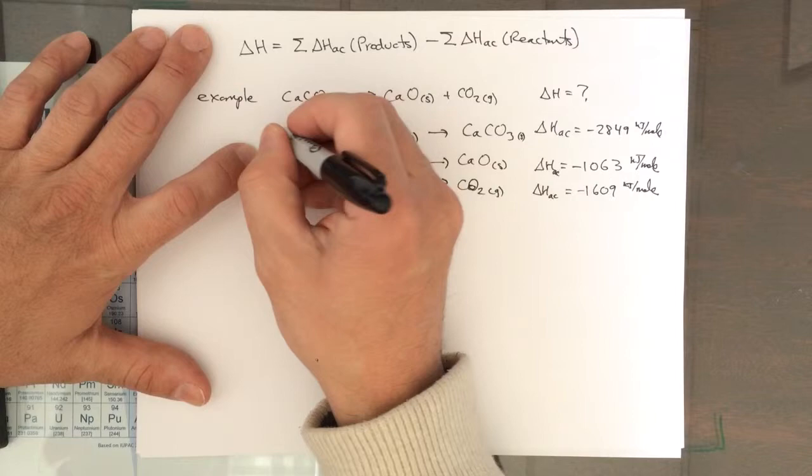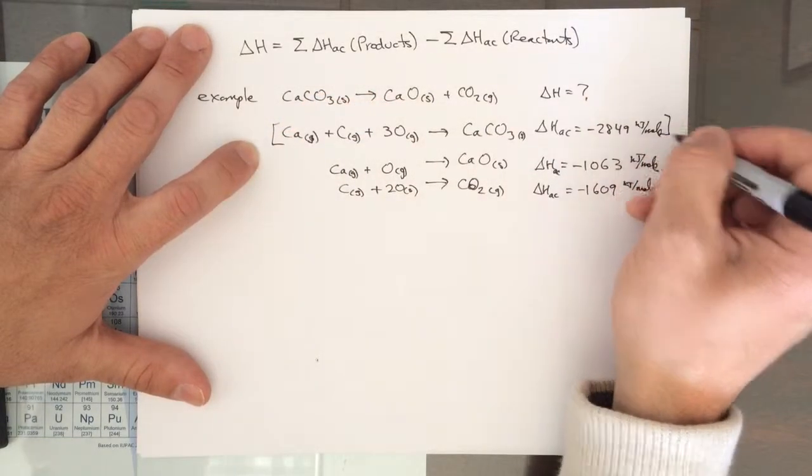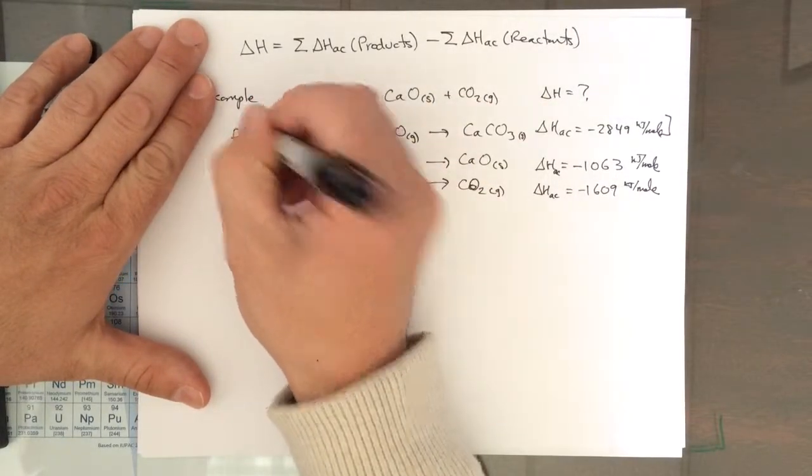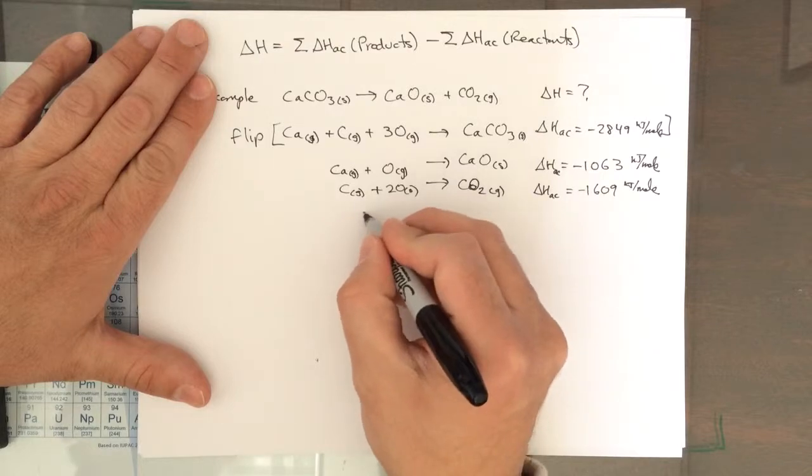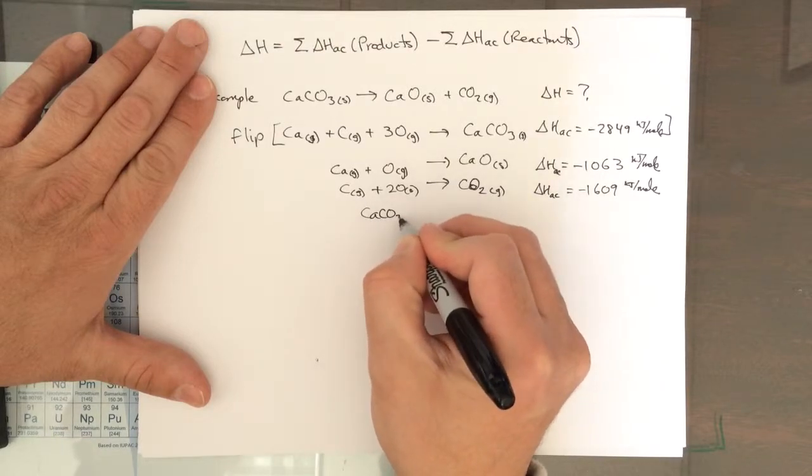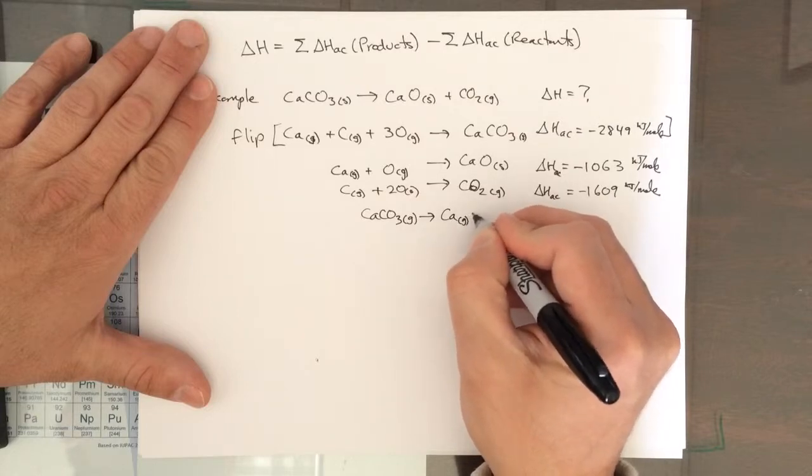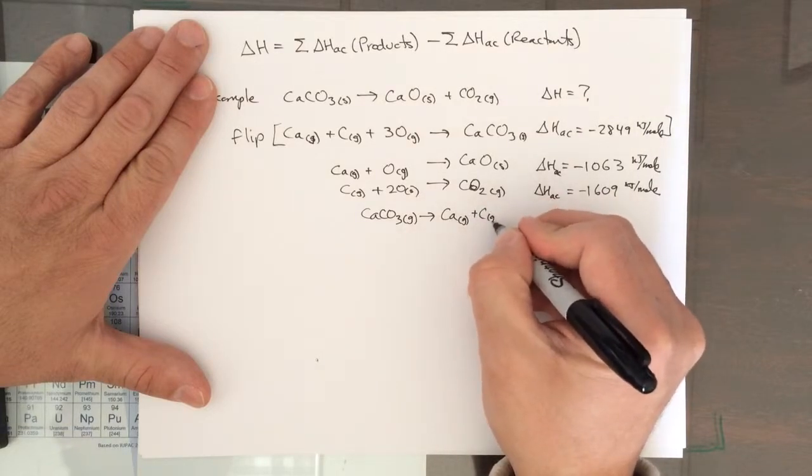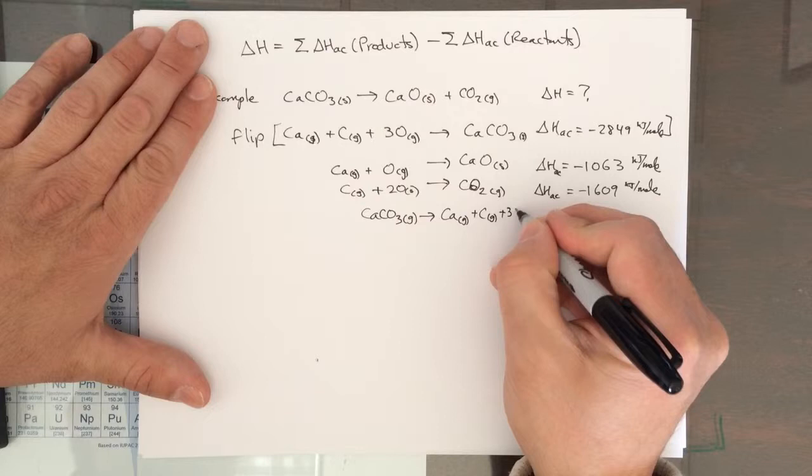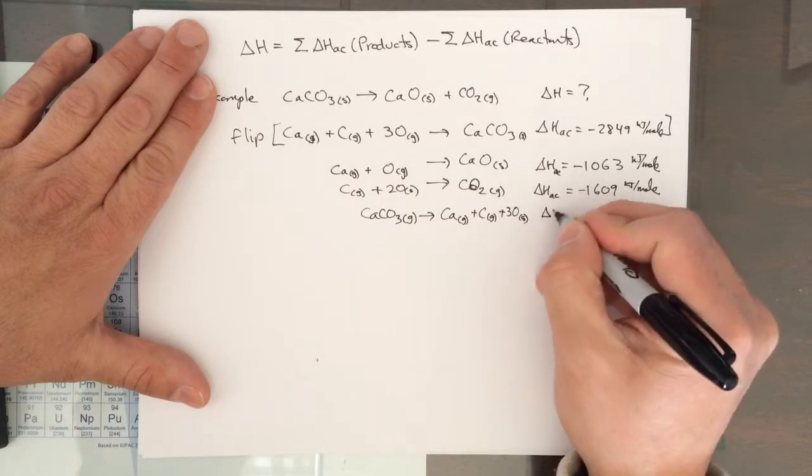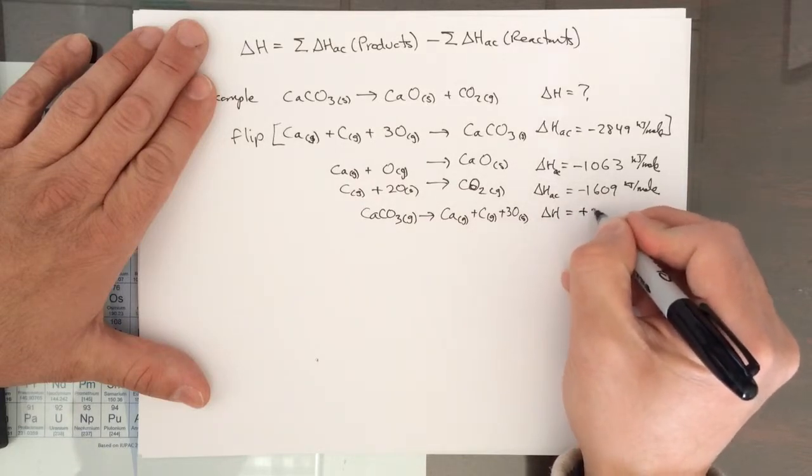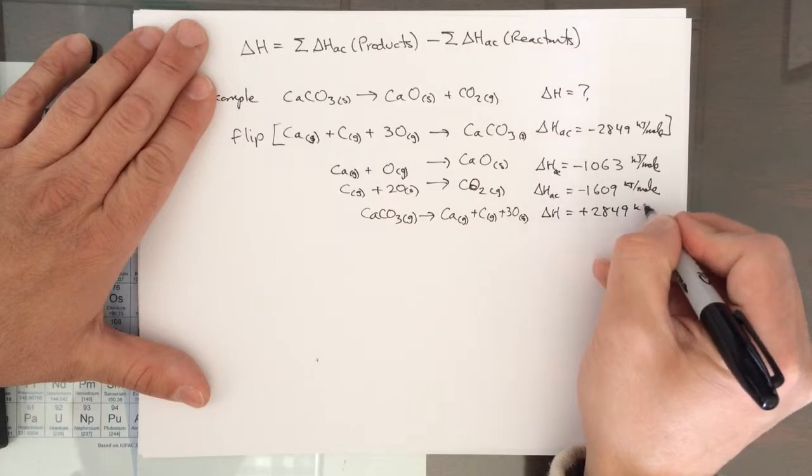We're going to take this reaction here and we're going to flip it. Now we're going to have calcium carbonate on the reactant side and that's going to form calcium gas, carbon gas, 3 oxygen gas. The delta H will now be positive 2849 kJ per mole.